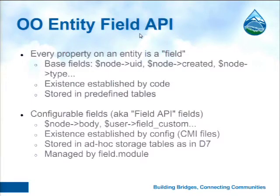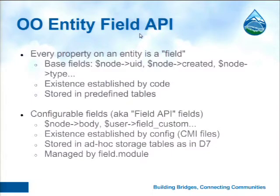The basic idea is to have an object-oriented API to access stuff on an entity. Unlike in Drupal 7 where you have properties — the base stuff like the user node title, author user ID, and created timestamp — we call everything a field now. The difference is there are non-configurable fields defined in code and stored in predefined tables, and there are configurable fields defined in the field module stored in ad hoc field data tables. But everything is now a field and the idea is that everything is accessed the same way and has the same capabilities.